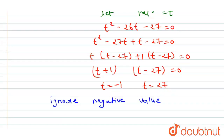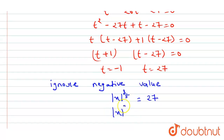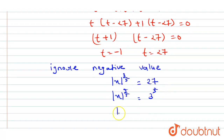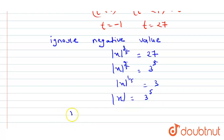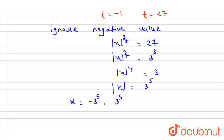With t = |x|^(3/5) = 27, we write |x|^(3/5) = 3³. The 3s cancel, giving |x|^(1/5) = 3, so |x| = 3^5. Since it is a modulus, we get two values: x = -3^5 and x = +3^5. The product is (-3^5)(3^5) = -3^10.